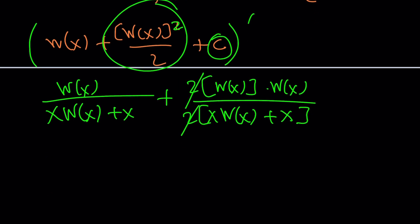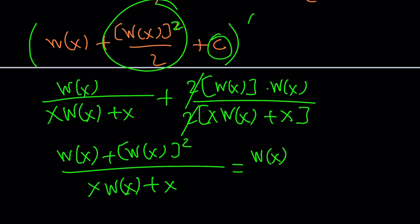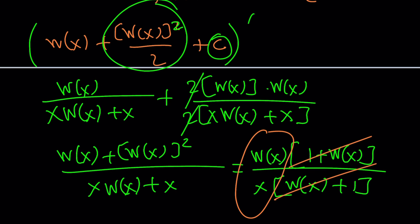Notice that we do get a common denominator already. So, we can add the numerators W of x plus W of x squared divided by x W of x plus x. And, if you factor out W of x here, you're going to get 1 plus W of x. And, if you factor out x here, you're going to get W of x plus 1. These two are going to cancel out, leaving us with W of x divided by x, which confirms our findings.